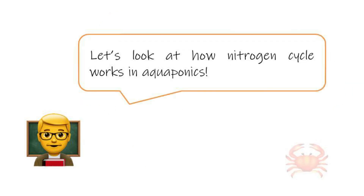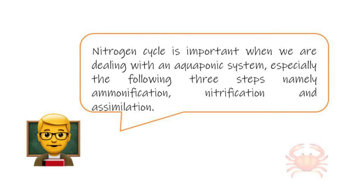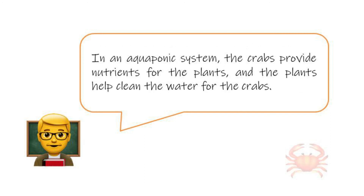Furthermore, as you have just learned about the nitrogen cycle in this chapter, let's look at how the nitrogen cycle works in aquaponics. The nitrogen cycle is important when dealing with an aquaponics system, especially the following three steps: ammonification, nitrification, and assimilation. In an aquaponics system, the crabs provide nutrients for the plants, and the plants help clean the water for the crabs.